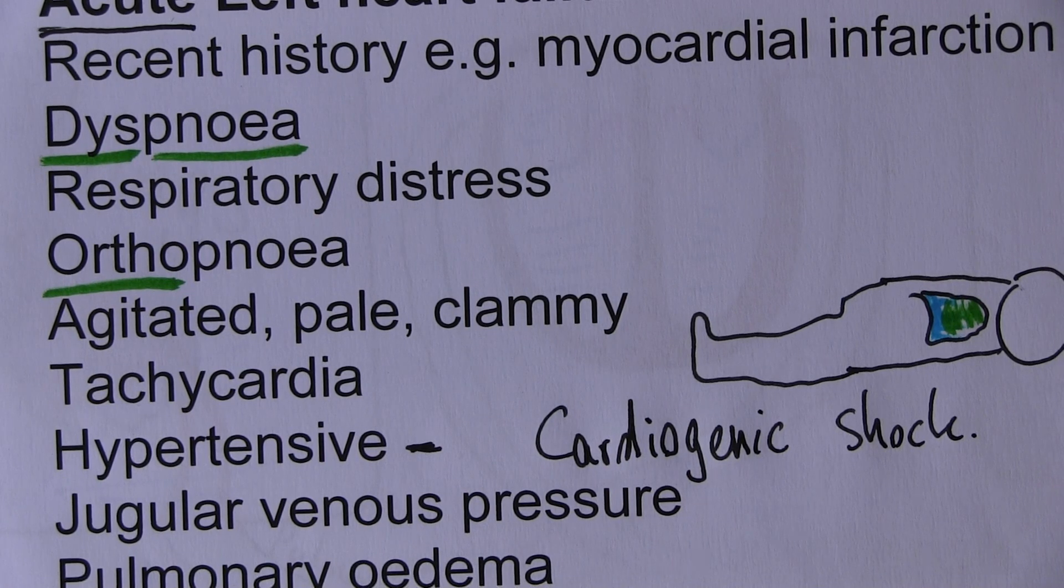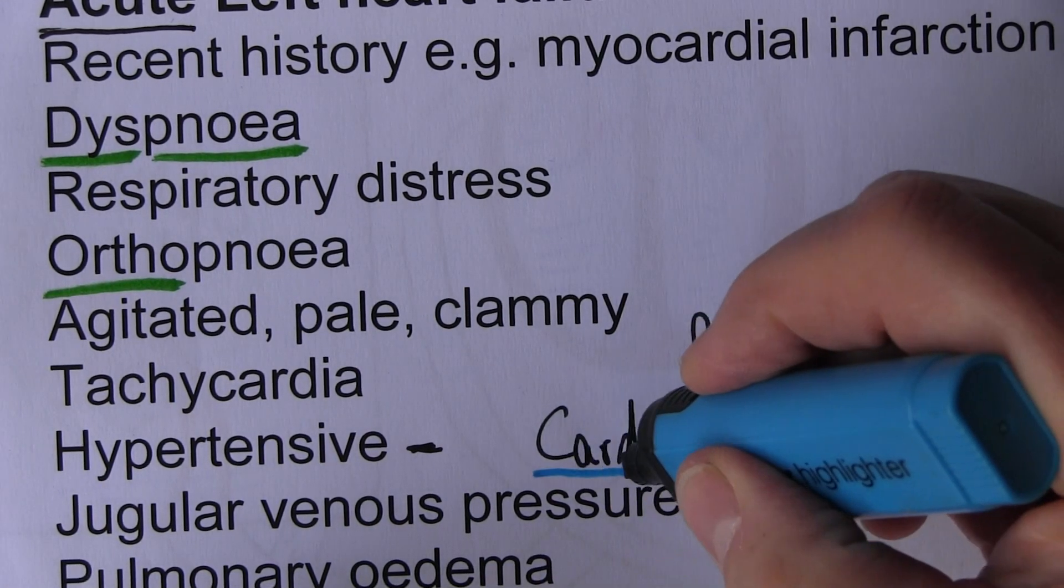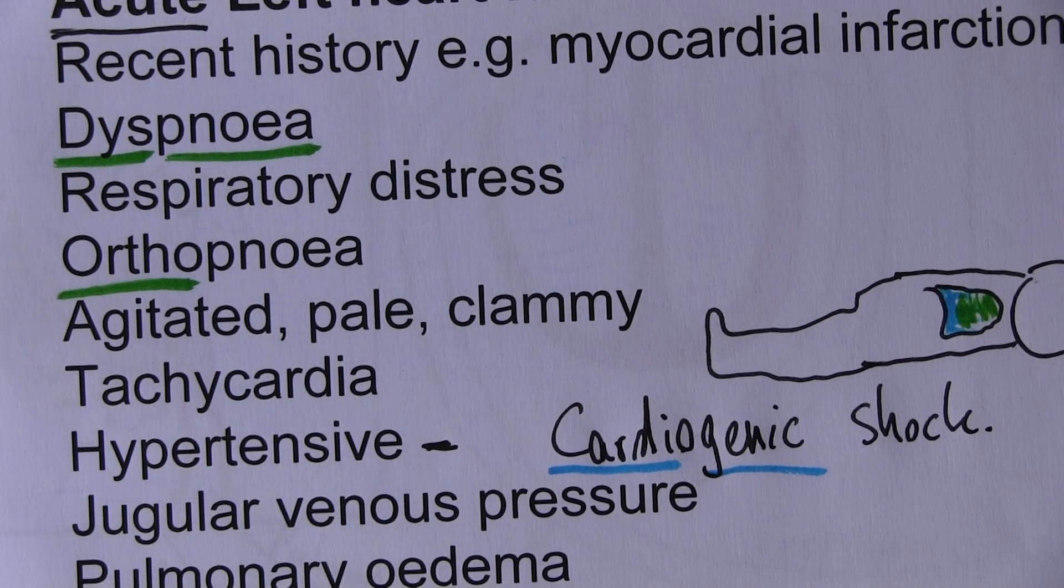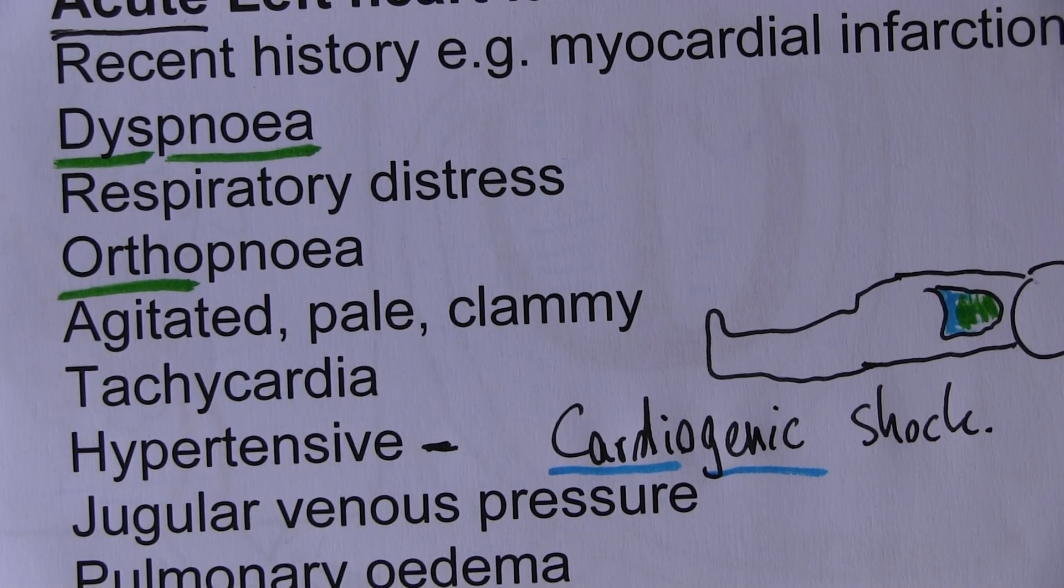Shock is when blood pressure is too low to perfuse the tissues of the body. Cardio is heart. Genic means genesis, where it began. A shock that begins with the heart - cardiogenic shock.